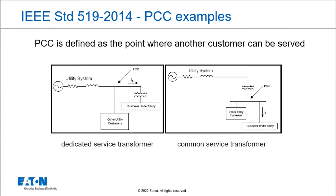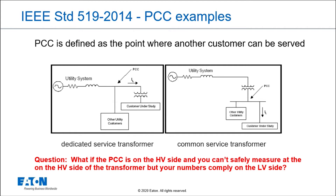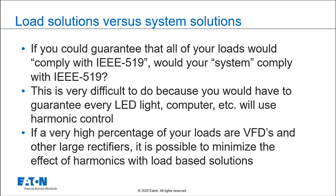A lot of times people ask: what if I have to check voltage distortion and current distortion on my transformer, but I don't own the transformer and the utility wants me to check it on the primary? Well, if you pass the distortion levels on the secondary, you're going to pass on the primary. Harmonic currents come from the loads, so if you're putting harmonic currents on the system, the current goes through the transformer — except for some third harmonics, triplins — so current distortion on the primary and secondary should be about the same. Voltage distortion will be less on the primary than on the secondary, because the transformer impedance is one of the bigger parts of the system impedance.